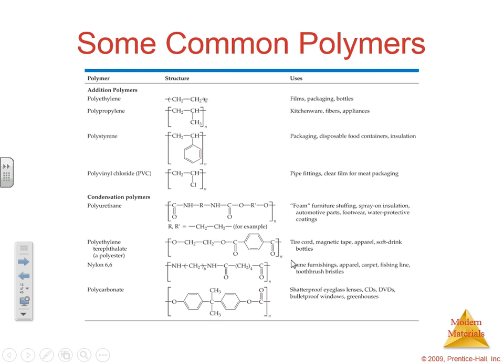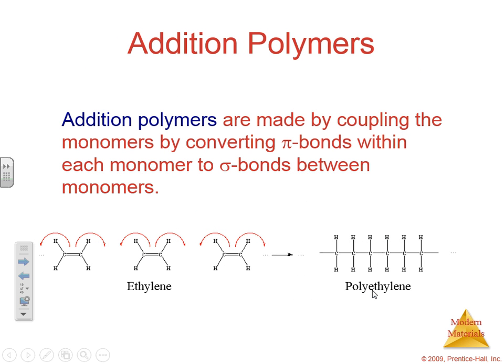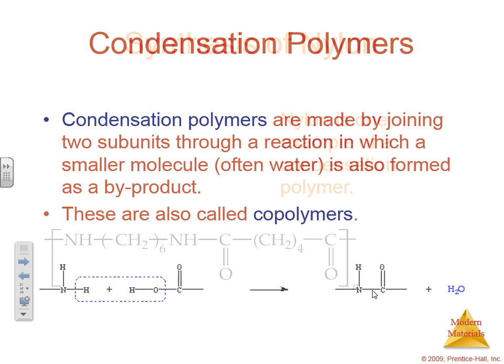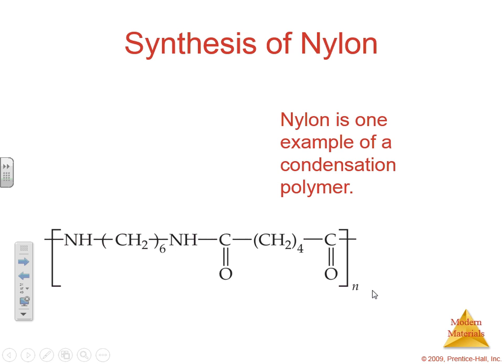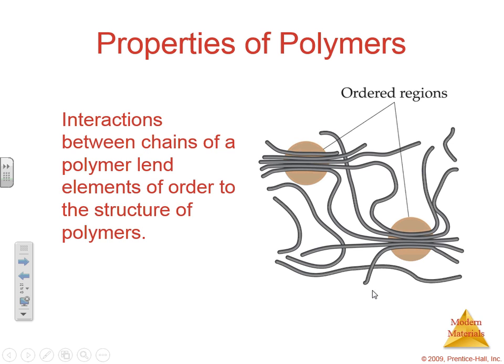What are some common polymers? This slide I want you to understand a little bit. Examples include polypropene, polystyrene, polyvinyl chloride (PVC), and nylon. Where is this stuff used? Films, packaging, kitchenware, pipe fittings, shatterproof glasses, CDs, furnishing apparel — all sorts of stuff. Polymers are made by coupling small molecules of carbon and repeatedly bonding them together. A lot of plastics are polymers, as are many kitchen aid products.